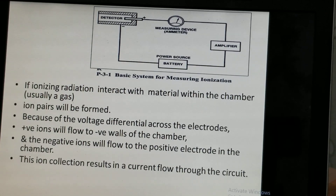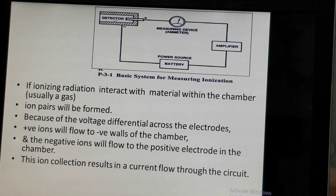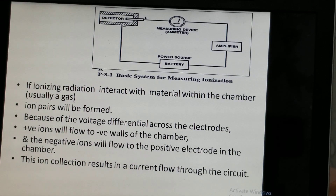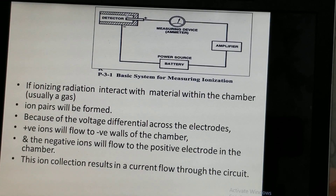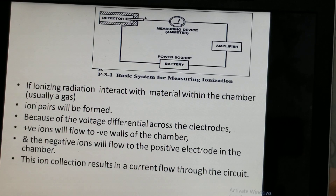When ionizing radiation interacts with the material in the chamber — which is usually filled with gas — ion pairs are formed. Due to the voltage differential across the electrodes, positive ions flow towards the negative electrodes (the chamber walls), and negative ions flow towards the positive electrode (the central wire). This ion collection results in a current flow through the circuit.